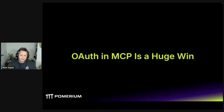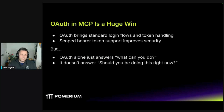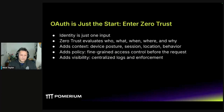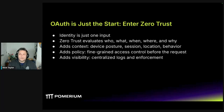Let's talk about OAuth quickly. The spec got updated recently and I believe it's rolling out in the SDKs. OAuth brings a standard login flow and token handling — you get scope and bearer token support, which improves security. But OAuth alone just answers 'what can you do?' — it doesn't answer 'should you be doing this right now?' That's where zero trust enters the scene. You've got your identity, and zero trust evaluates who, what, when, where, and why — device posture, IP, time of day, anything your security posture decides to put in place.